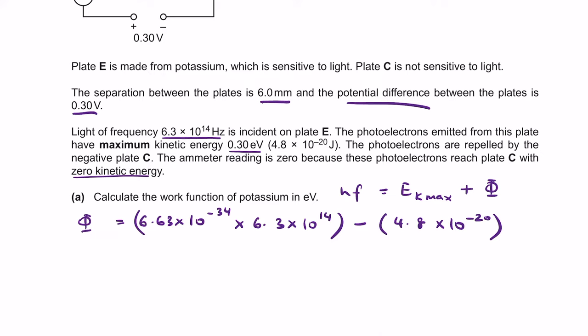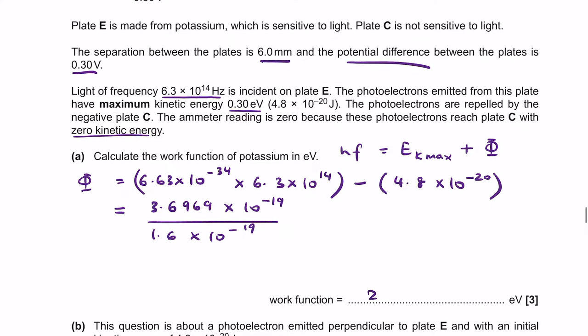Work function equals (6.63 times 10⁻³⁴ times 6.3 times 10¹⁴) minus 4.8 times 10⁻²⁰ joules, giving 3.6969 times 10⁻¹⁹ joules. Dividing by 1.6 times 10⁻¹⁹ to convert to electron volts gives 2.3 eV.